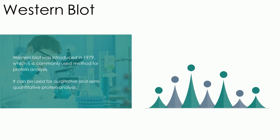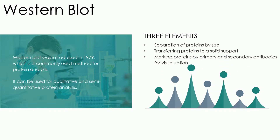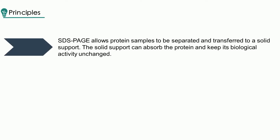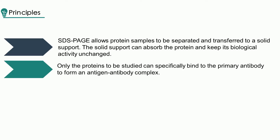For the accomplishment of the Western blot, there are three elements: separation of proteins by size, transferring proteins to a solid support, and marking proteins by primary and secondary antibodies for visualization. SDS-PAGE allows protein samples to be separated and transferred to a solid support, such as nitrocellulose or polyvinylidene difluoride membrane. The solid support can absorb proteins and keep their biological activity unchanged. The membrane is treated with the primary antibody of the target proteins, and only the proteins to be studied can specifically bind to the primary antibody to form an antigen-antibody complex.